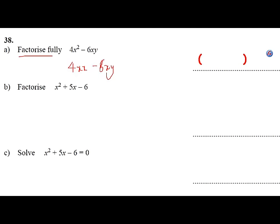I need to think about what number could go into 4 and 6. What's the biggest number that can go into 4 and 6? The biggest number that can go into 4 and 6 is a 2. What letters are common to both of these? X's are common to both of these, so I'll put 2x outside.